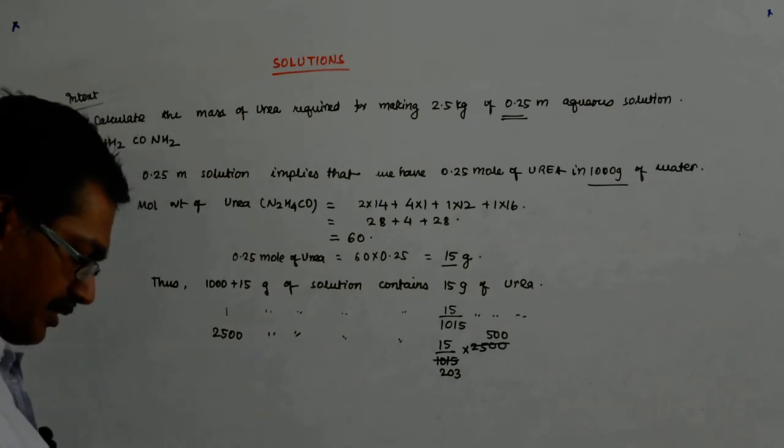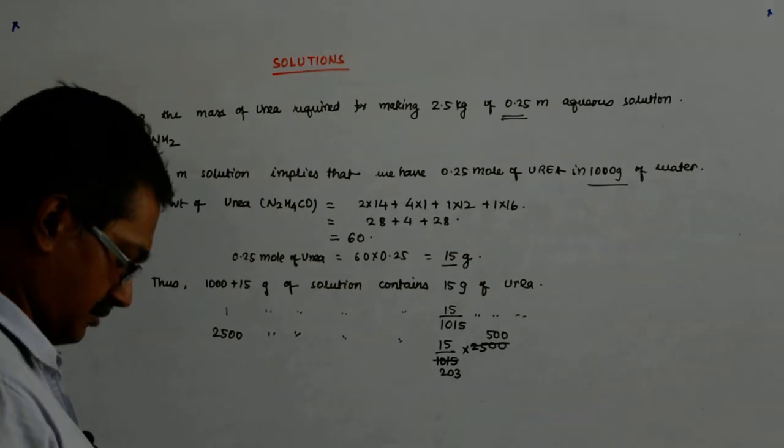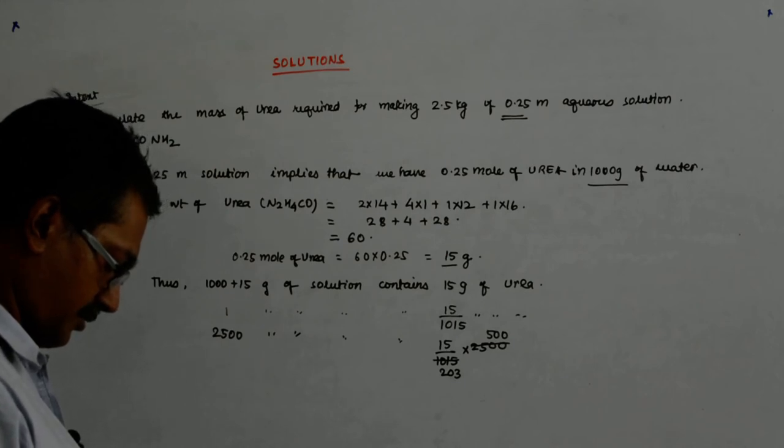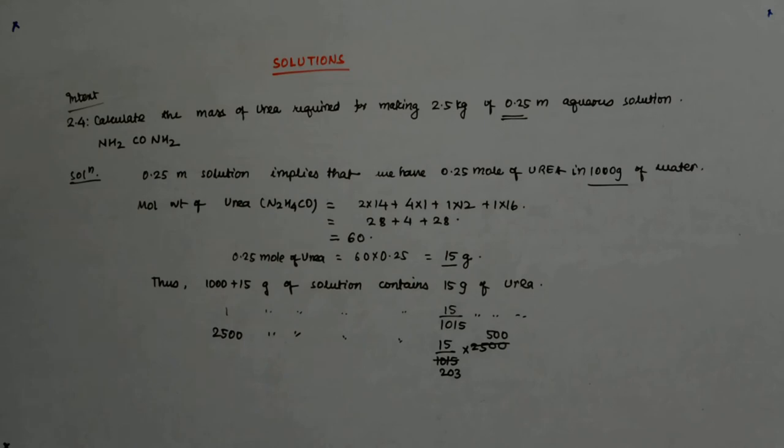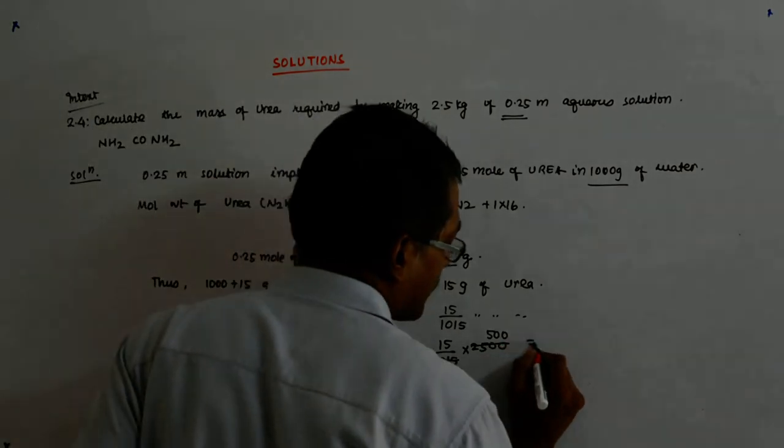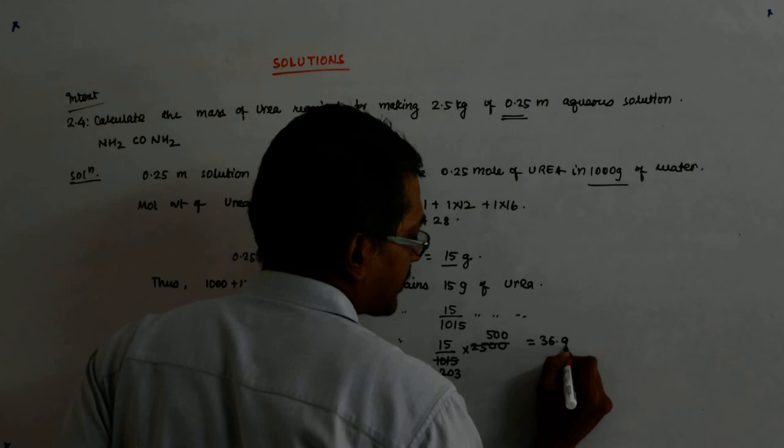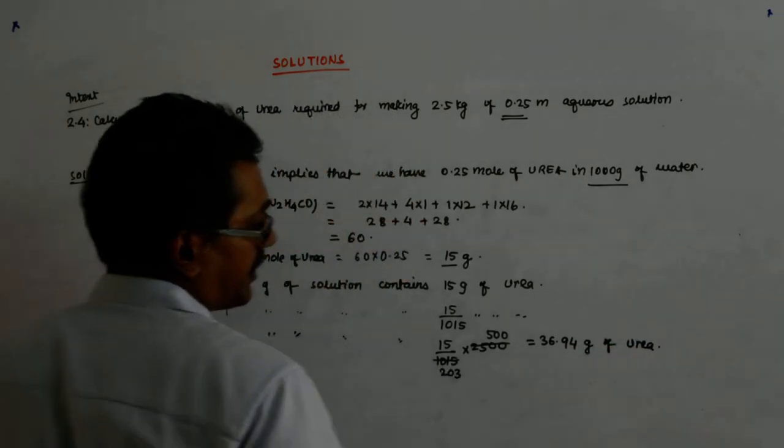15 into 500. So 15 into 500 divided by 203. So that gives you 36.95. 36.94. So that gives me 36.94 gram of urea.